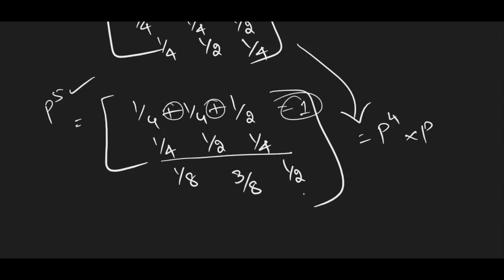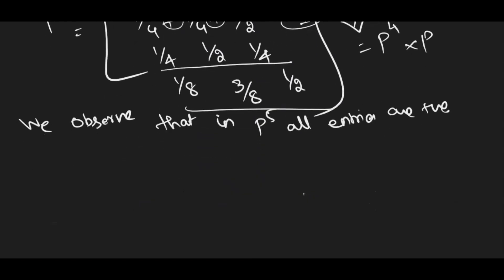Show that check the total 1/4+1/4 is 1/2+1/2, that is 1. Don't write like this but I am just asking you to do this for your checking. Similarly, you check this row, check this row. So all the values, if you add, you are getting the answer as 1. So you can see that observe, we observe that in P⁵, all entries are positive.